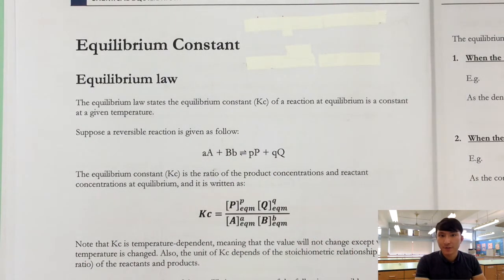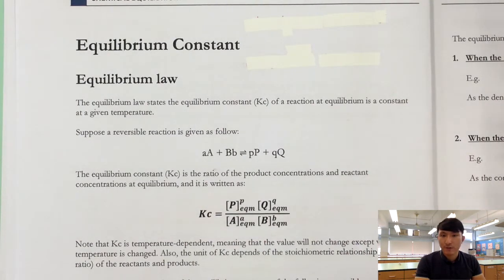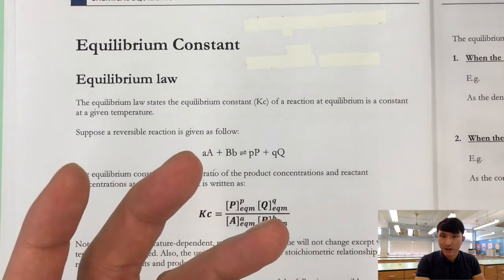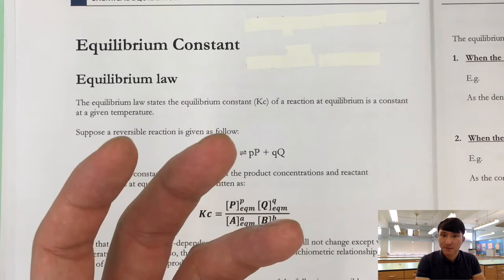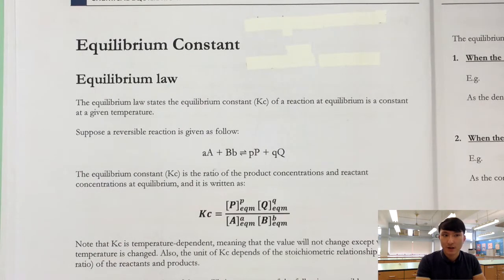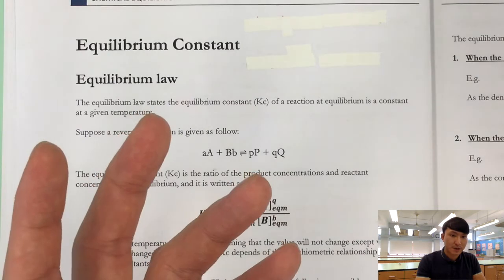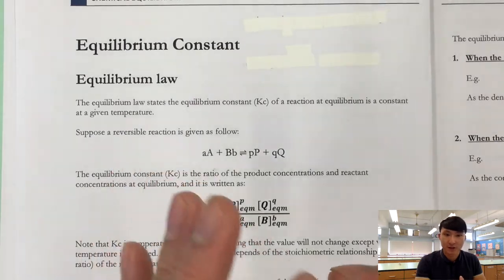Last time we talked about reversible reactions. Reactants can react to form products via the forward reaction, and the products can react and go back to the reactants via the backward reaction. For a given equilibrium system, we should expect to find some chemicals as reactants and some as products, mixed together. The question is: in that equilibrium state, how much reactant and how much product? Do we expect 50% reactant and 50% product? Well, it depends on the reaction itself and on the conditions provided to the equilibrium system.